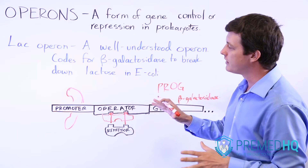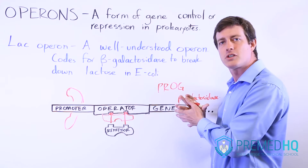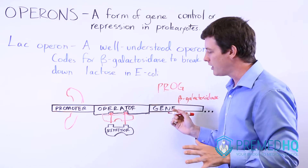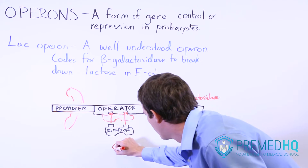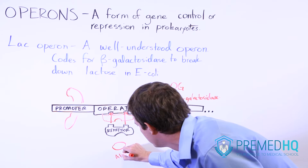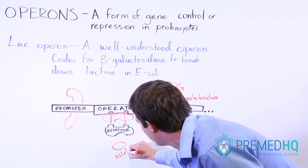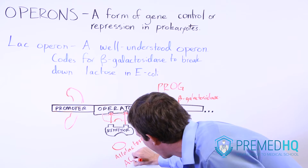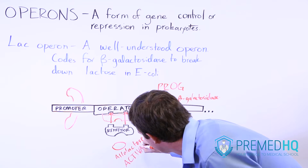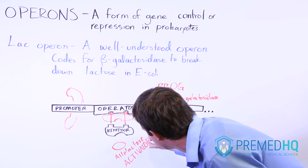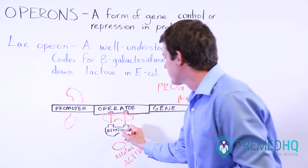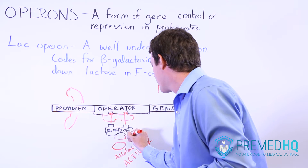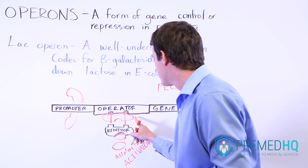When you encounter lactose in the cell's environment, the allolactose serves an important role as an activator. When the allolactose fits into the repressor — and the repressor has a binding site for the allolactose — the repressor will change shape.